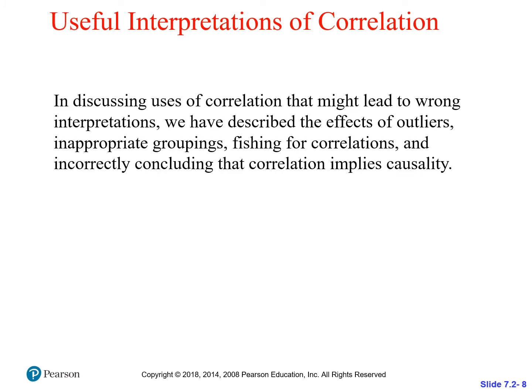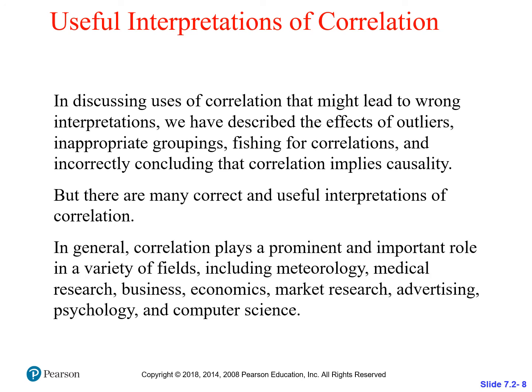Useful interpretations of correlation — correlations can lead to wrong interpretations, and you can also have people who fish for correlations or look for a certain relationship, leading to confirmation bias. But there are correct interpretations as well. Fields like meteorology, medical research, business, economics — especially macroeconomics — marketing, advertising, psychology, and computer science are all areas where correlation can help us make decisions about probable outcomes. If we recognize a correlation between two things and one is easy to predict while the other is difficult, we'll look at the easy one to help make decisions about the difficult one.